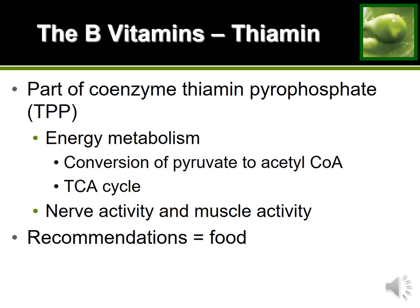The first B vitamin is thiamine. Thiamine makes coenzyme TPP, which is critical for energy metabolism because it helps convert pyruvate to acetyl-CoA. In the aerobic pathway, we go from glucose to pyruvate, then pyruvate to acetyl-CoA. That conversion would not be possible without coenzyme TPP, and we can't make TPP without thiamine.